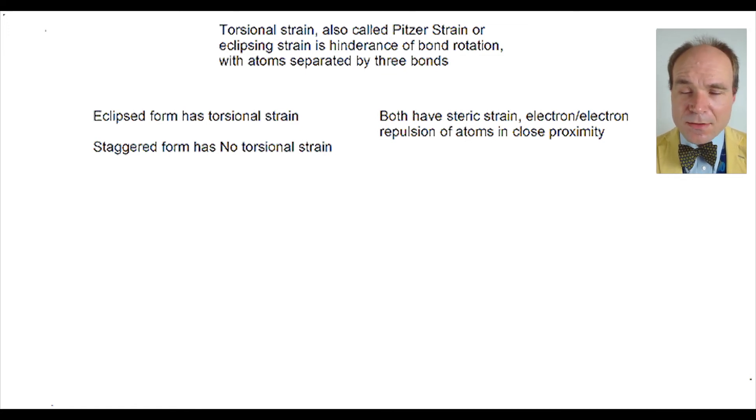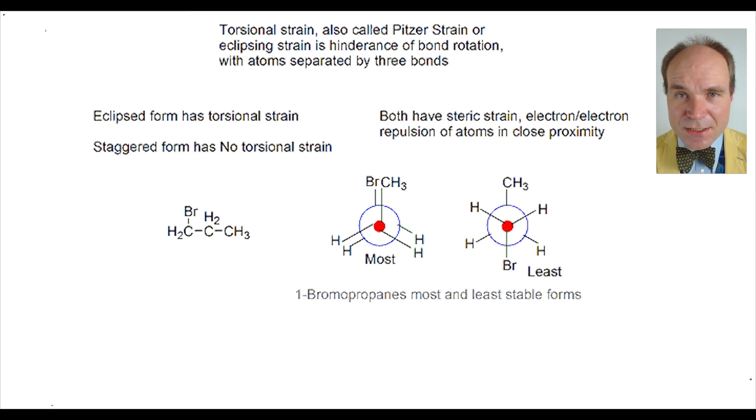Let's take a look at one bromo propane. Here we can see a highest energy conformation that is eclipsed and a lowest energy conformation that is staggered.